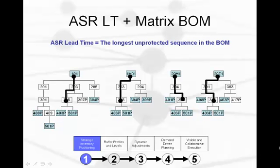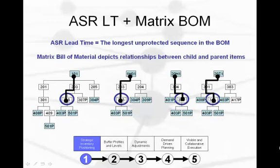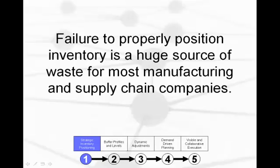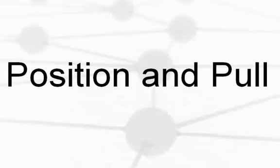Traditional MRP systems do not have the ability to see this type of lead time. Now that we've identified the longest unprotected path for each bill, we can look across the bills for common or shared items that lie on that path. This look across is called a matrix bill of material, and when combined with the ASR lead time concept, it will show us where to place stock buffers that compress lead time and leverage inventory across many points. Failure to properly position inventory is a huge source of waste. That is why we are looking to move from the world of push and promote to the world of position and pull.